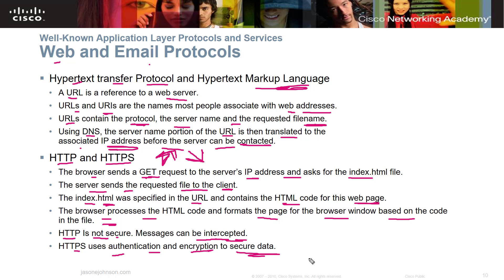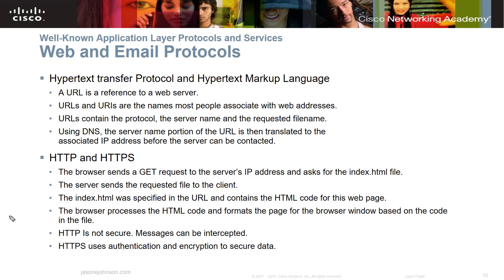You should always use HTTPS when entering passwords or sensitive information. I recommend using the HTTPS Everywhere extension for Chrome or Firefox browsers, which forces HTTPS whenever it's available. Why doesn't everybody just use HTTPS? It takes extra overhead — HTTPS requires more bandwidth. Web hosting providers don't put HTTPS on everything because it costs more bandwidth, and that bandwidth costs money.